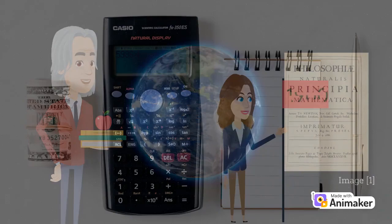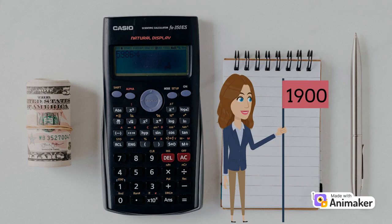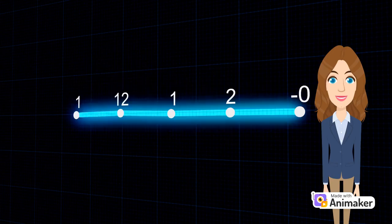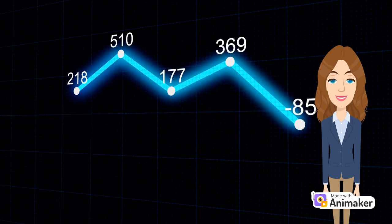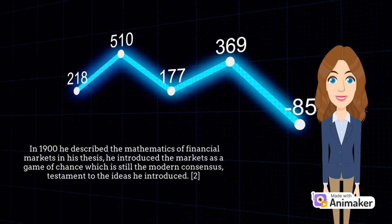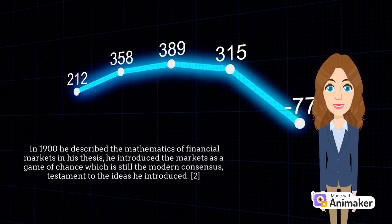The start of the history of financial physics was made explicitly clear by Bachelier, a man who received a large amount of bad luck throughout his career, and whose contemporaries were unequipped to receive his ideas. In 1900, he described the mathematics of financial markets in his thesis. He presented the markets as a game of chance which is still the modern consensus, testament to the ideas he introduced.